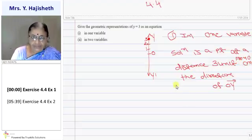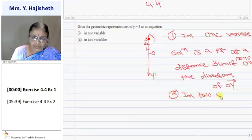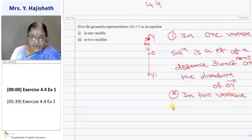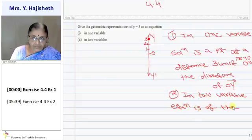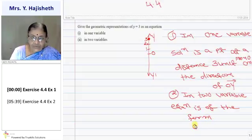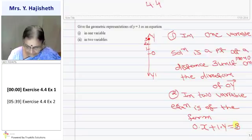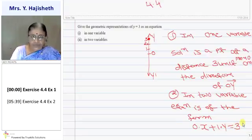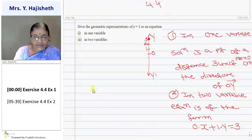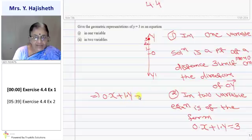In two variables, the equation is of the form: 0 into x plus 1 into y equals 3, which can be written as 0·x + 1·y − 3 = 0.